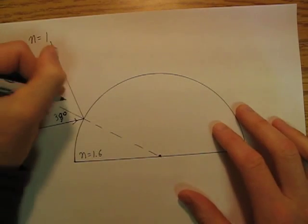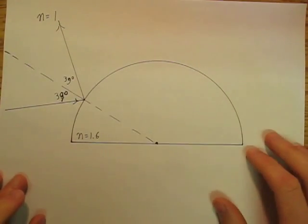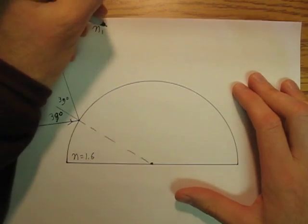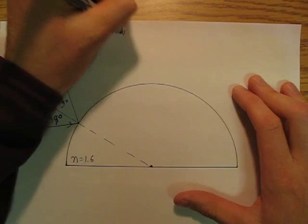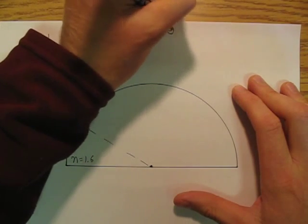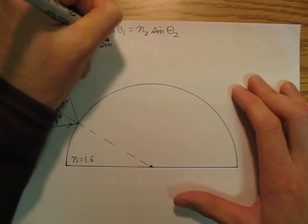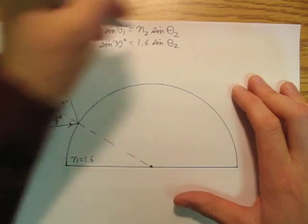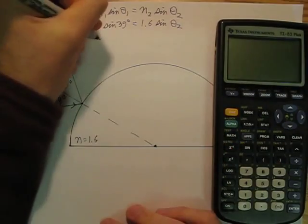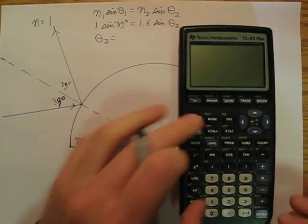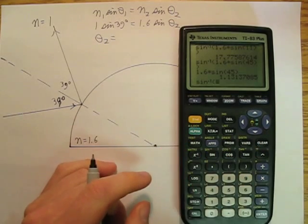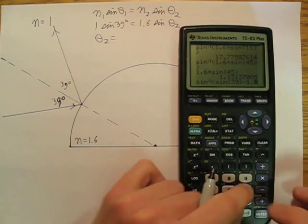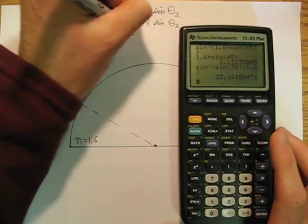And then some of the laser is going to be reflected, or it's going to be refracted in, hence we're going to say n1 sine theta 1 is equal to n2 sine theta 2. And so we're going to say 1 sine 39 degrees is equal to 1.6 sine theta 2. And so then doing that on my calculator, I get theta 2 is going to be the sine inverse of sine 39 degrees divided by 1.6 and I'm going to get 23.2 degrees.